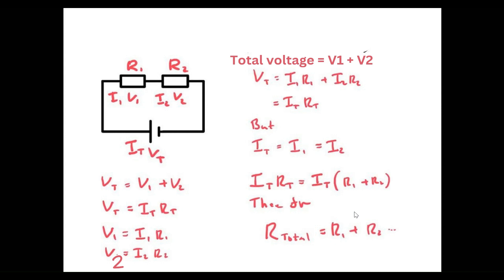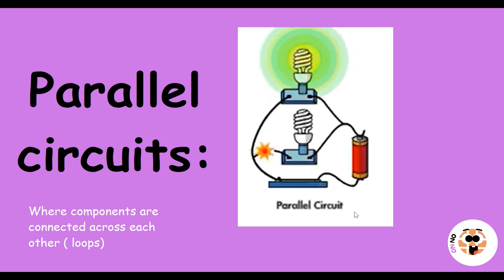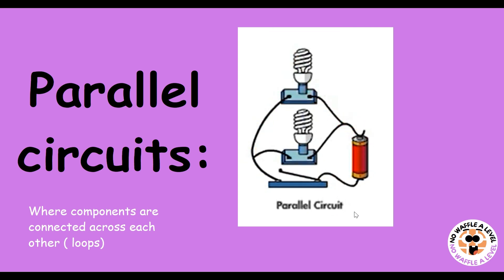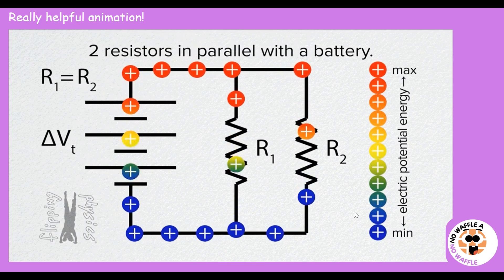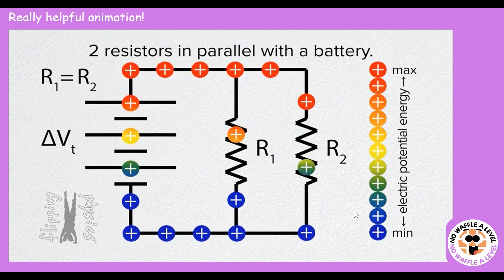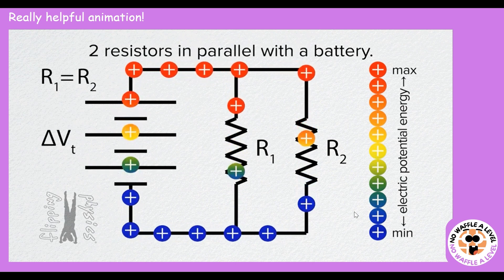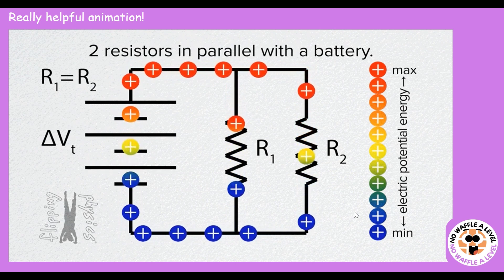That's the proof for series circuits. Later in the video we'll look at the proof for parallel. Parallel circuits are different from series in that components are connected across each other in loops or branches, so the current is splitting effectively.